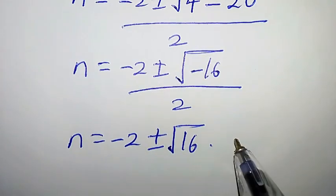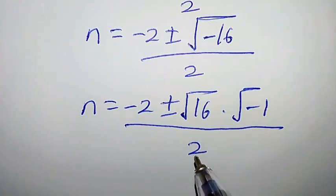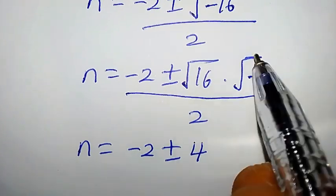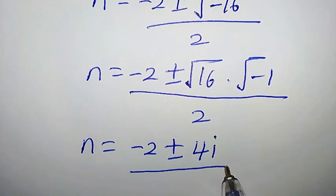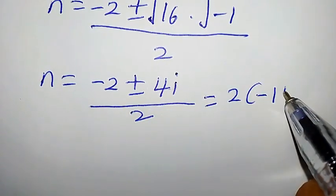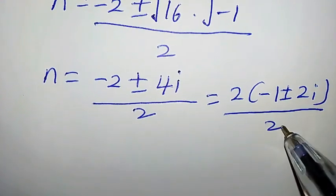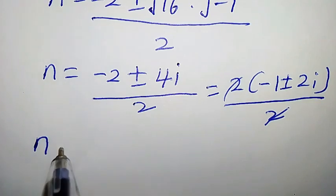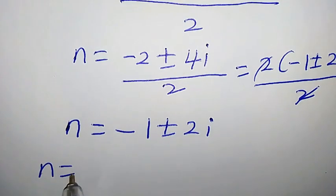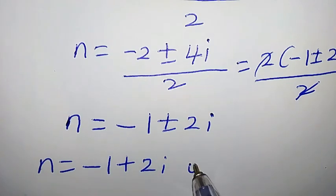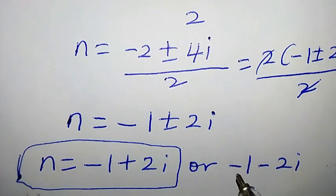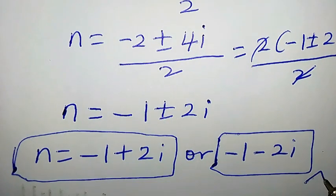We can write square root of negative 16 as square root of 16 times square root of negative 1, all over 2. Square root of 16 is 4 and square root of negative 1 is i. From the numerator we pull out 2: we get 2 times (negative 1 plus or minus 2i) over 2. The 2s cancel, giving n equals negative 1 plus or minus 2i. So n equals negative 1 plus 2i is the second solution, and n equals negative 1 minus 2i is the third solution. Thanks for watching.